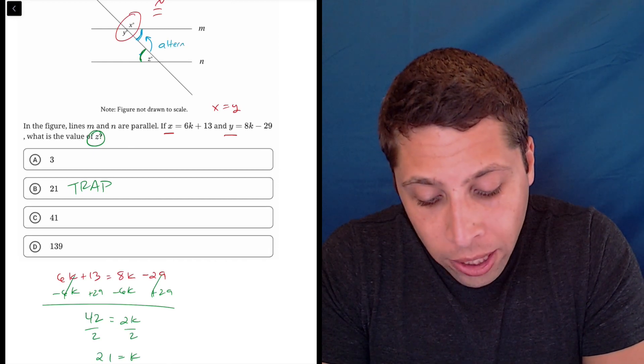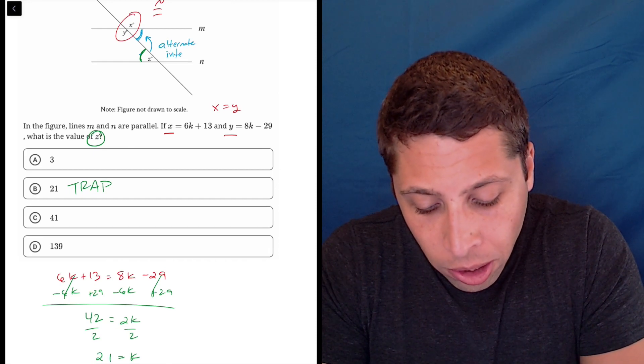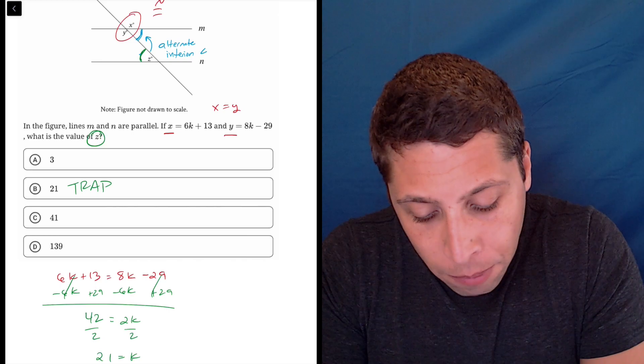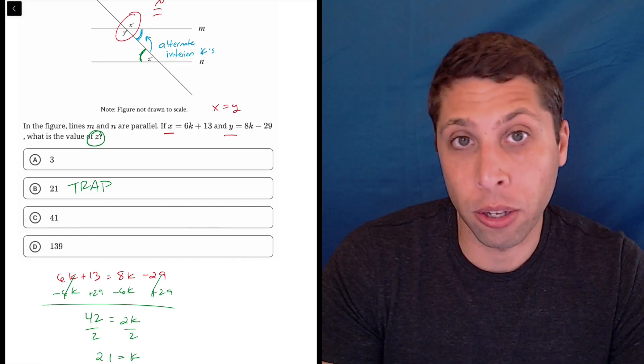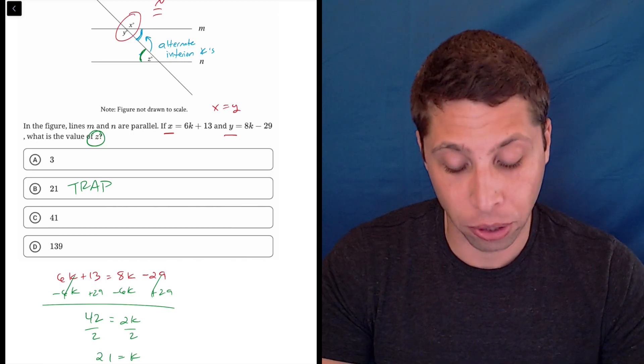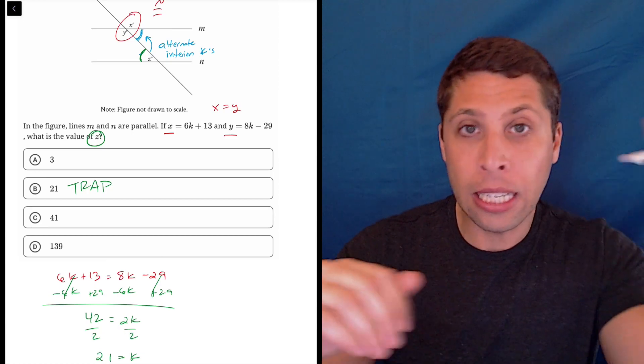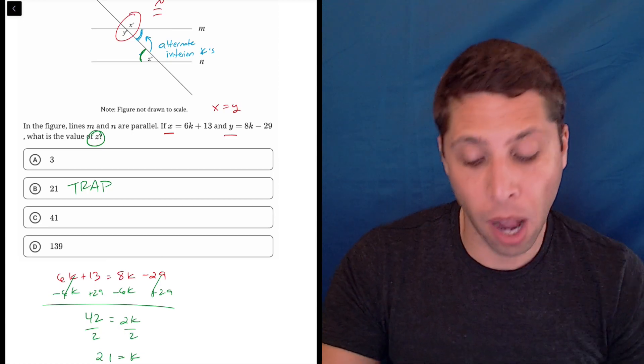Right? These are what are known as alternate interior angles. This is probably the most important thing that you learn when you learn this shape in geometry classes, how that Z shape kind of forms and gives us some congruent angles.